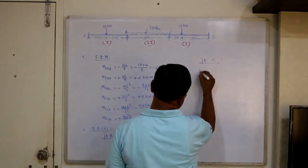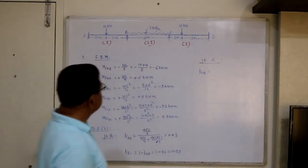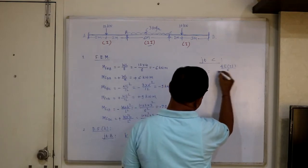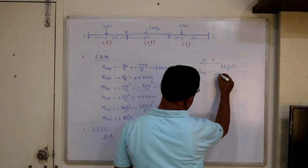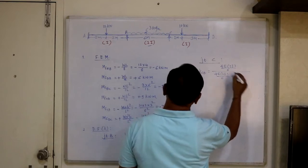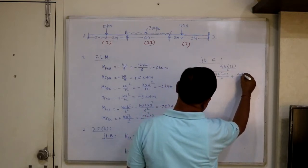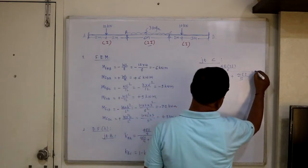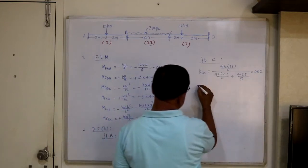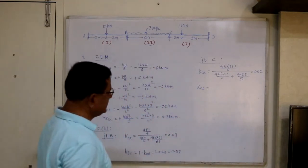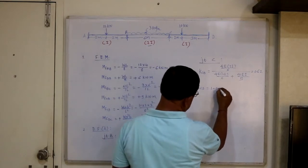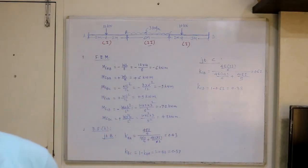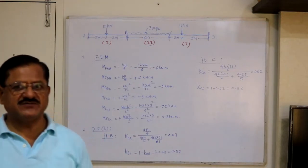For joint C, k_CB equals the stiffness of CB — since B is continuous, this is 4E(2I)/6 — divided by total stiffness, which includes CD with far end D fixed: 4E(I)/5. This gives k_CB = 0.62. Therefore k_CD equals 1 minus 0.62 equals 0.38. These two steps — fixed end moments and distribution factors — are very straightforward.